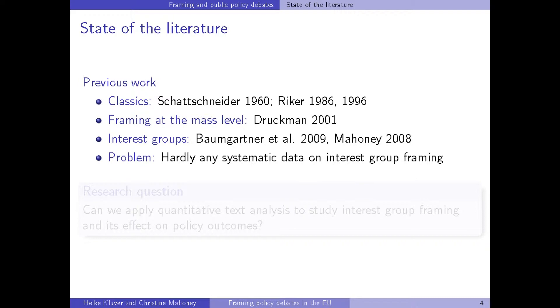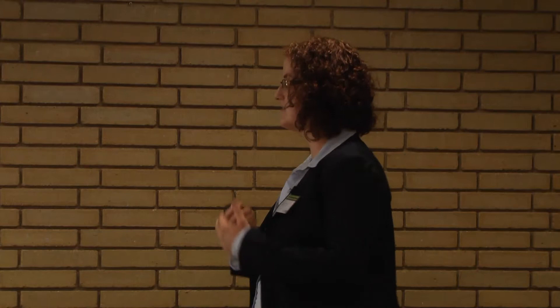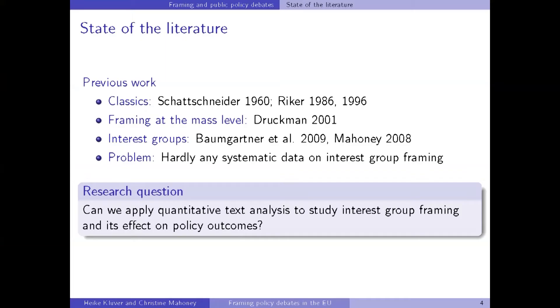If we look at the literature, we find a lot of classical work — for instance by Schatzschneider and Riker — who emphasised conceptually and theoretically the importance of framing, how you spin a debate, how you sell your argument. In terms of empirical studies, we have only few studies so far. One is by Druckmann, which studied framing at the mass public opinion level. In terms of interest groups, we only have two studies that empirically try to look into framing — Baumgartner and also my co-author Christine Mahoney — but these don't provide truly systematic data. The research question of this paper is therefore whether we can apply quantitative text analysis to study interest group framing and its effect on policy outcomes.